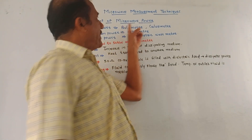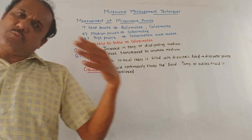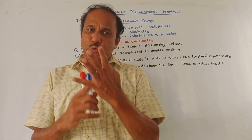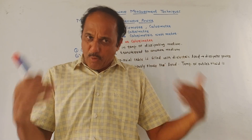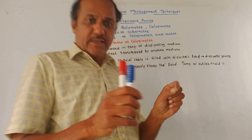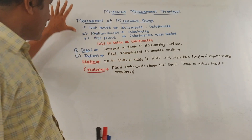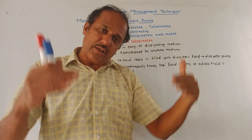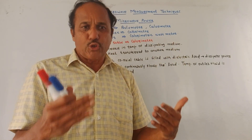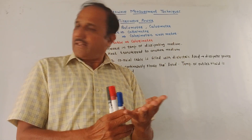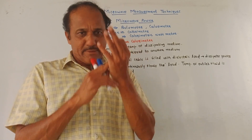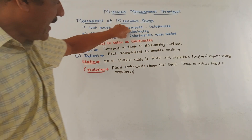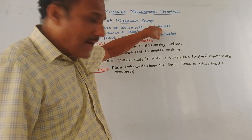The next part is measurement of microwave power. From an exam point of view, a question may ask about the different methods used to measure microwave power, and explain the calorimeter method. There are three categories depending on the type of power: low power, medium power, and high power. For measurement of low power, a bolometer and calorimeter are used.